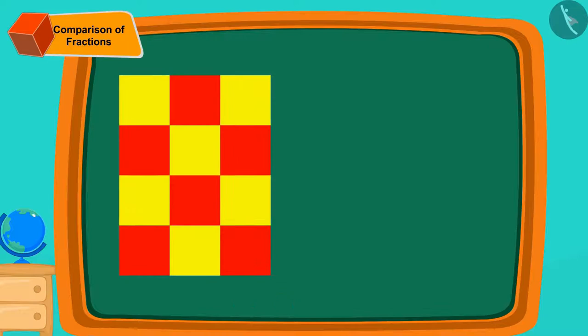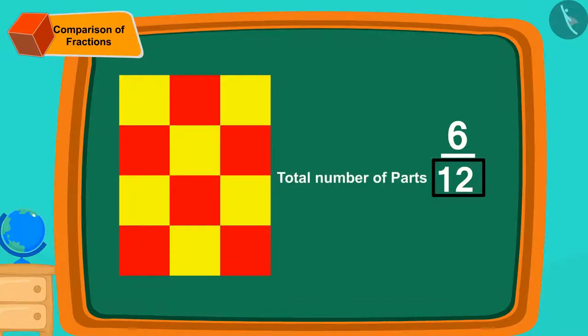Let us write it as a fraction. Yellow-colored sections are 6/12 of the design. Children, you remember right? The number 12 tells us that our total cloth is divided into 12 equal parts.